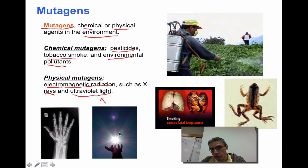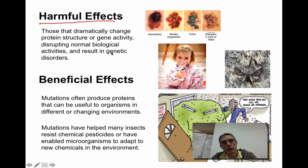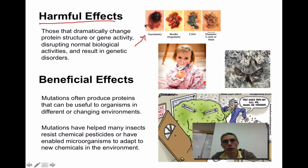Up to this point, we've talked a lot about the negative or harmful effects of mutations, because there's definitely a lot of things out there that can be bad when it comes to changing that genetic material. Things like cancer — we have an example of skin cancer in the upper right — which could be a result of some mutation in your cells causing them to reproduce out of control. But we need to understand that there are mutations out there that can be very beneficial to the organism.